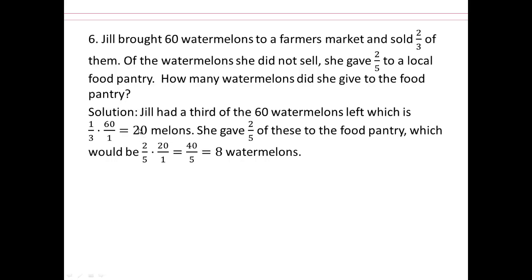Of the 20, 2 fifths of these are given to food pantry. So 2 fifths. Remember the word of. What did we say? Of means multiplication. So 2 fifths of 20. 20 is the same as 20 over 1. So then what? Multiply fractions means what? 2 times 20 is 40. 40 over 5 reduces to 8.